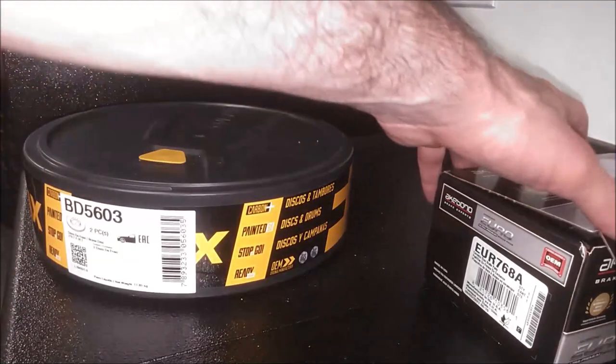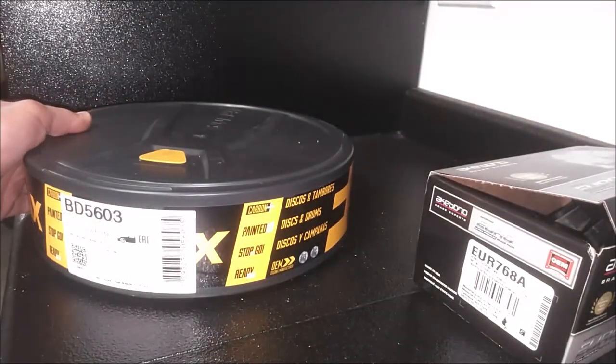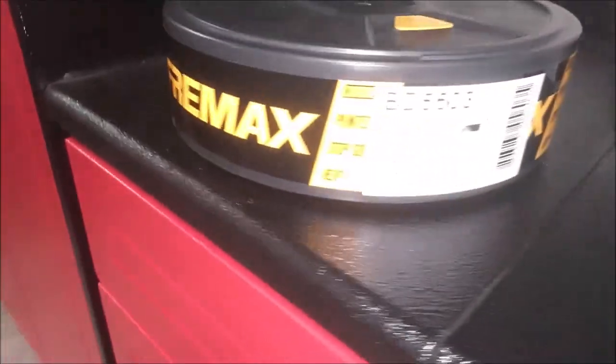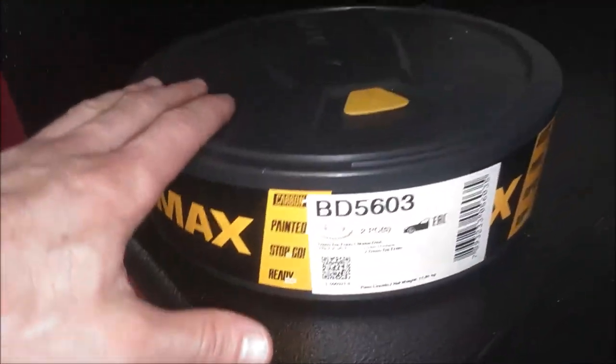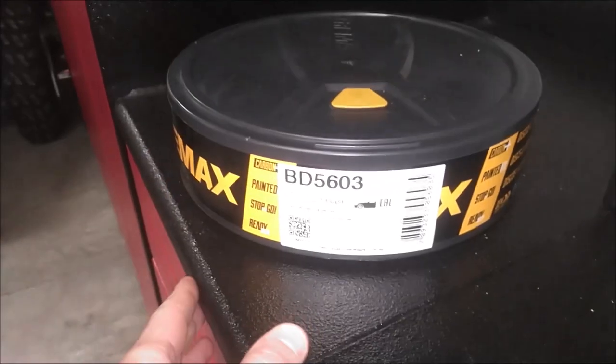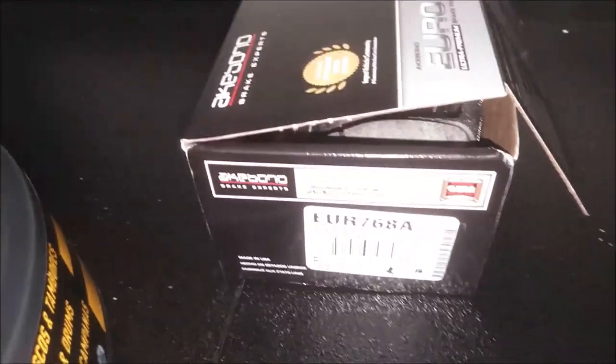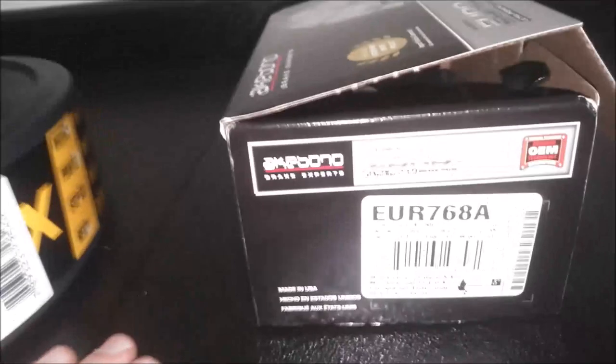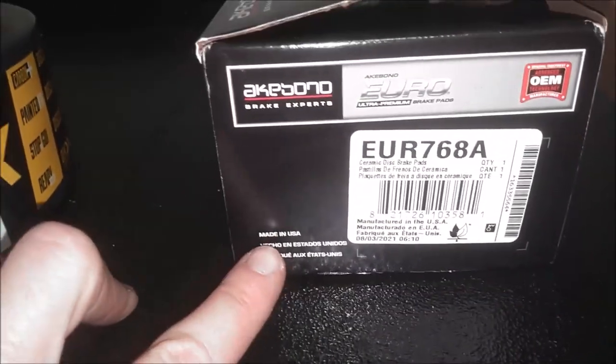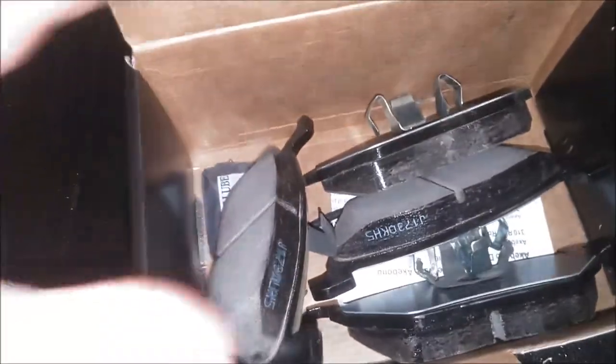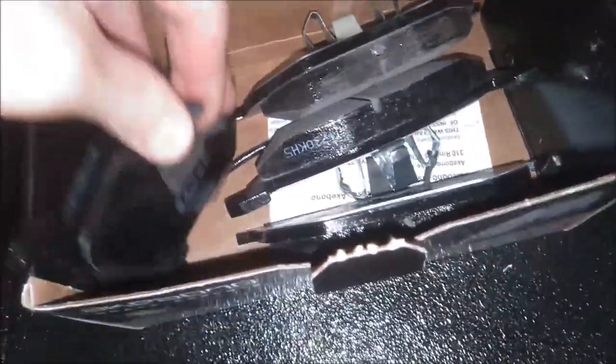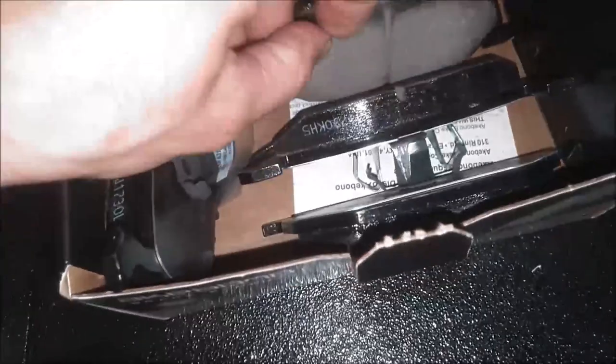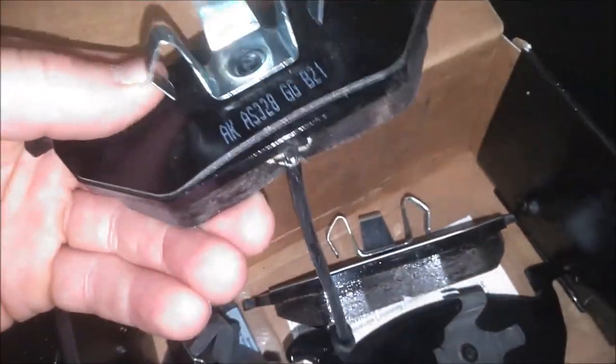Alright guys, here are the rotors and pads I chose. These ones here are called Freemax. And these are actually painted which are nice to help prevent corrosion. And these are Ecobono pads. Here's your part number. These are made in USA which is nice. And you can see the pads here. This one down below here does have the sensor. I'm just going to cut those wires off. I'm not going to use that.